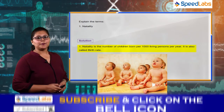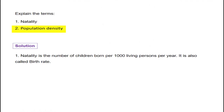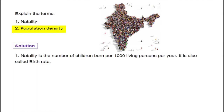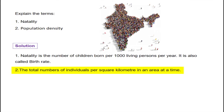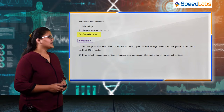Natality is also called the birth rate. Next is population density. Population density is the total number of individuals per square kilometer in an area at a given time.